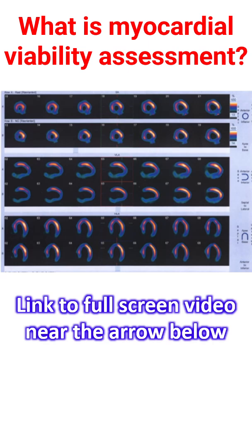There are several imaging tests which can assess myocardial viability. The most easily available one is echocardiography — ultrasound imaging of the heart. Echocardiography will show the thickness of the heart muscle, its contractions, and scarring if any.